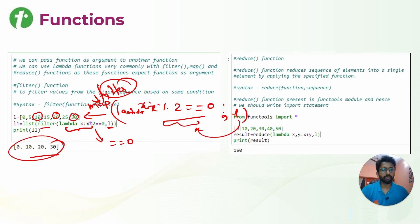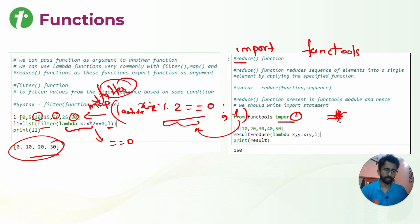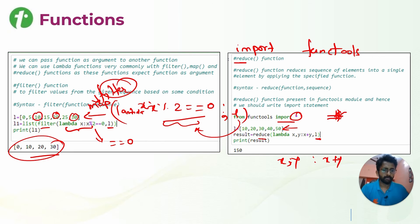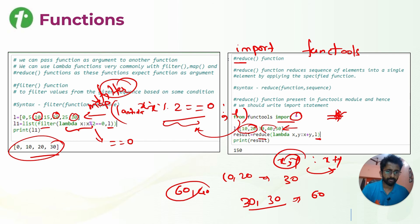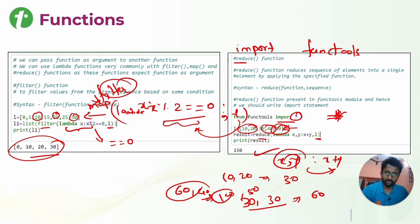Next is the reduce function. To use it, we import from functools, which copies all methods, classes, and functions into your code. Given a normal list, we reduce it with the reduce function using lambda x, y: x + y, meaning two values are added at a time. So 10 + 20 = 30, then 30 + 30 = 60, then 60 + 40 = 100, then 100 + 50 = 150. All values are reduced to a single output.